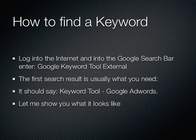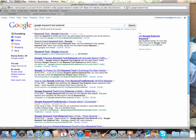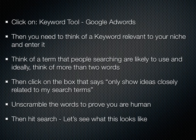So, how to find a keyword: first of all, log into the internet, go into the Google search bar, and enter 'Google keyword tool external.' Usually the first search result that comes up is the right one — it should say 'Keyword Tool Google AdWords.' That's the one you want. So let me show you what it looks like. There's your Google page — you've entered 'Google keyword tool external' in the search bar, and that result directly underneath is the one you want to click on.